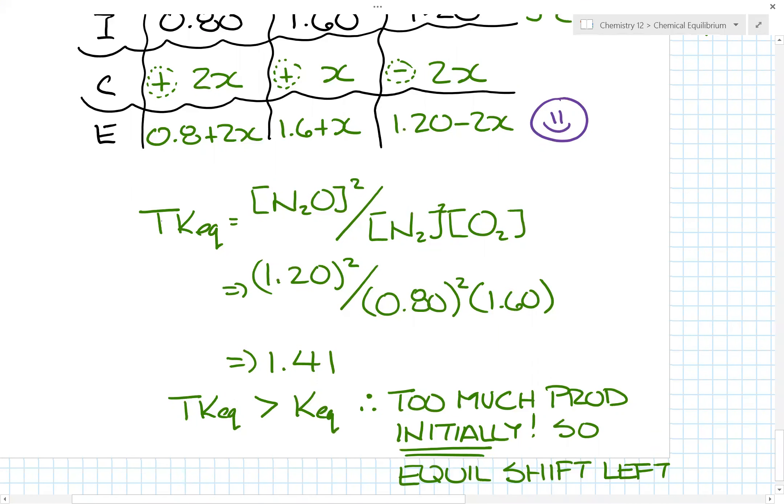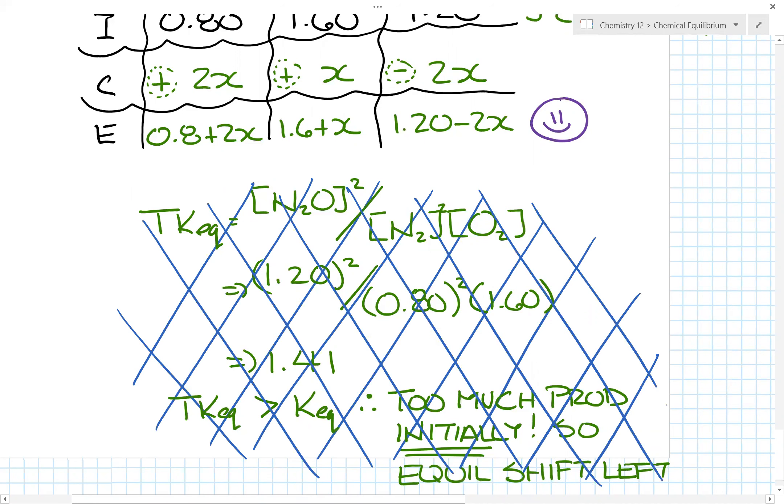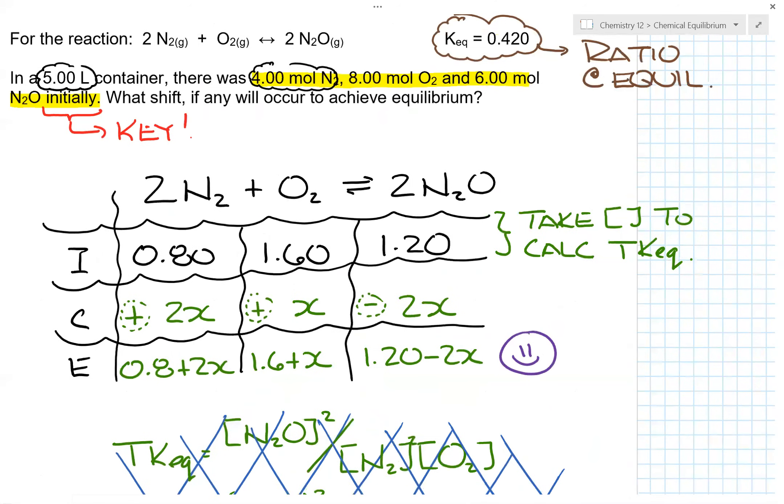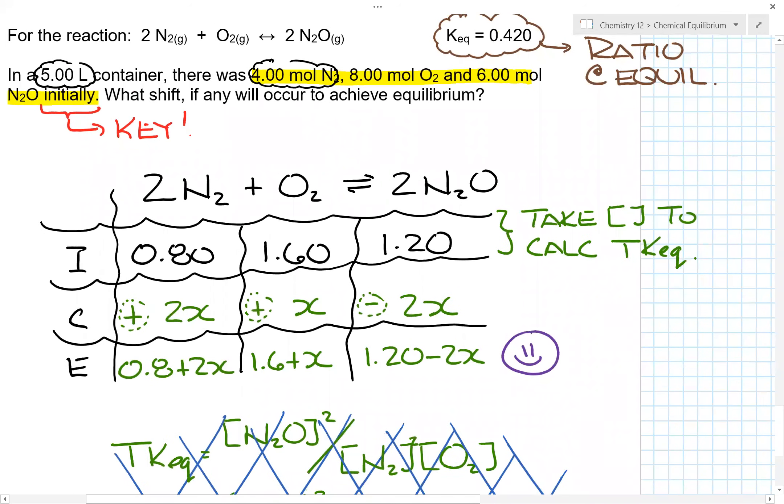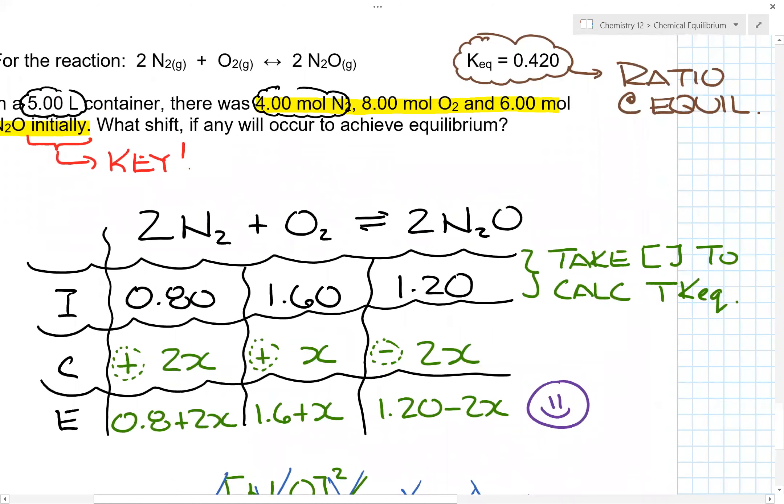Once you figure out which side goes up, which side goes down, because all these numbers did was tell you which side would go up, which side would go down. And once you figured out your equilibrium values, it's just like regular calculations where you plug in the numbers to try to calculate x and the Keq would be the 0.420.